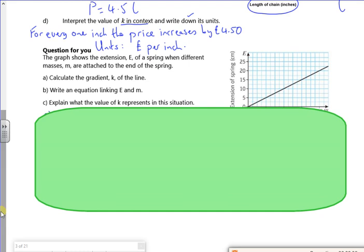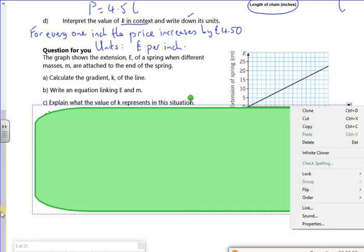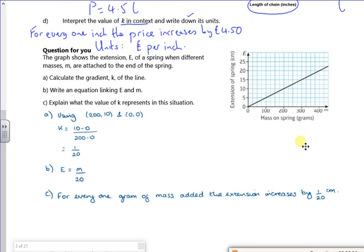So it's an extension of a spring, E, and M is the mass on it. So if you haven't got any mass on it, you've got no extension. A bit of that. Come on. Excuse me. So you make sure you've got that right. It doesn't ask for it, but the units would be centimeters.